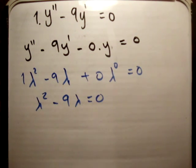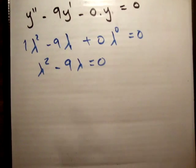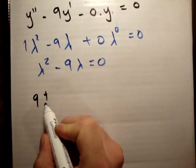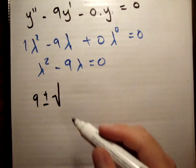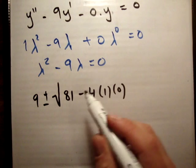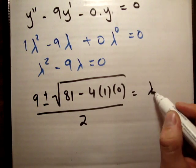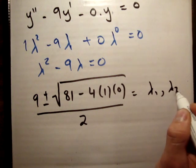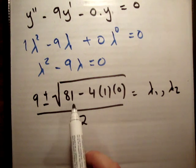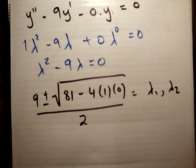Alright, now of course, I'm just going to do it the general way. I know we can just solve this straight out, but I'm going to do it the very general way. So it's going to be minus b, which is 9, plus or minus the square root of b squared, which is 81, minus 4 times 1 times 0, all over 2. And these are equal to lambda 1 and lambda 2, our two roots. So of course, this is going to be equal to the square root of 81, which is 9.